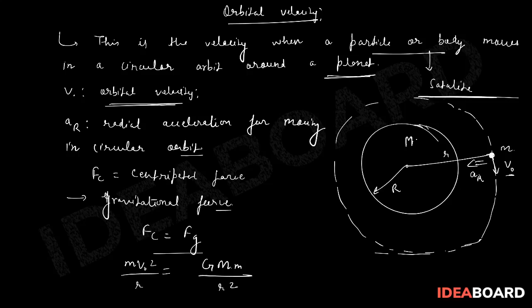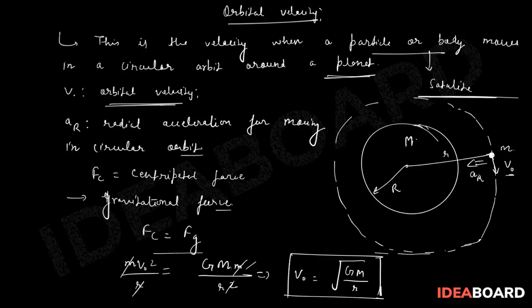F_gravitational will be GMm upon r square, and centripetal acceleration will be mv0 square upon r. This r is cancelled out, and m is cancelled out.